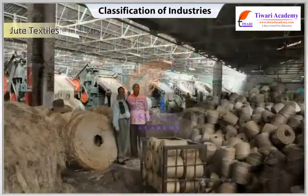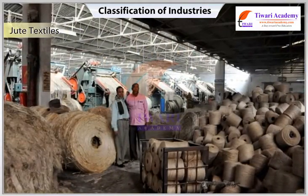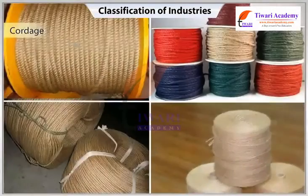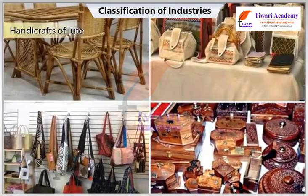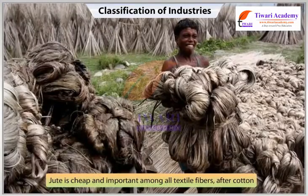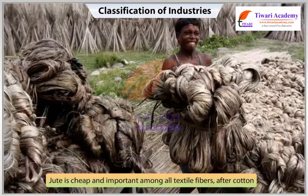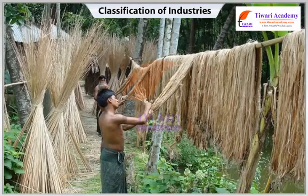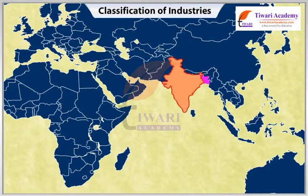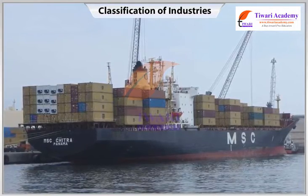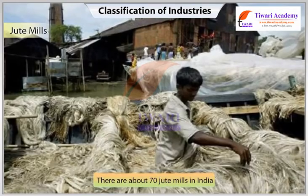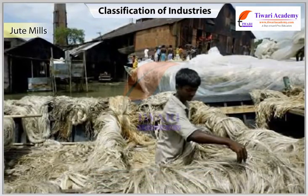Jute textiles: Jute is known as the golden fiber. Jute fiber is mainly used for sacking and cordage; different forms of handicrafts also use this fiber. Jute is cheap and important among all textile fibers after cotton. India is the largest producer of raw jute and jute goods, and stands at second place as an exporter after Bangladesh. It contributes to exports to the tune of nearly one thousand crore rupees. There are about 70 jute mills in India, most located in West Bengal.